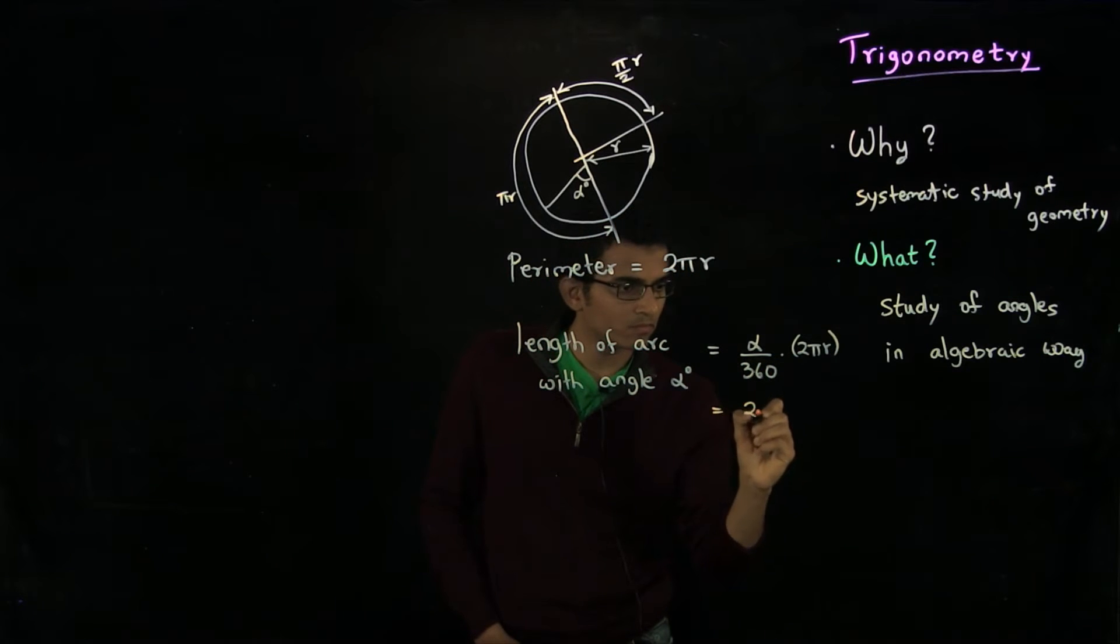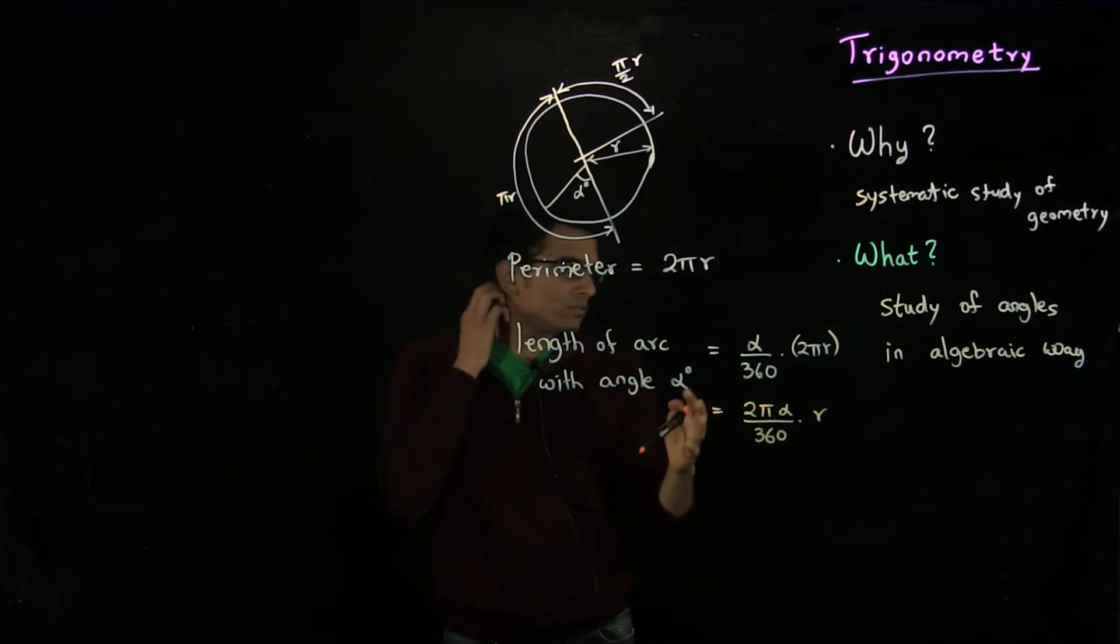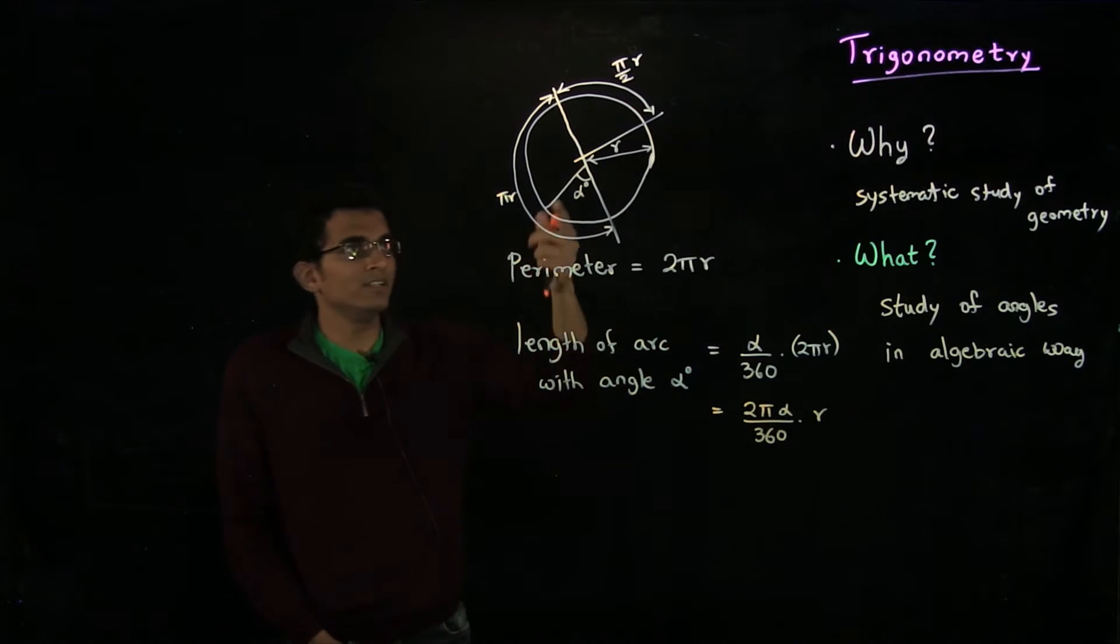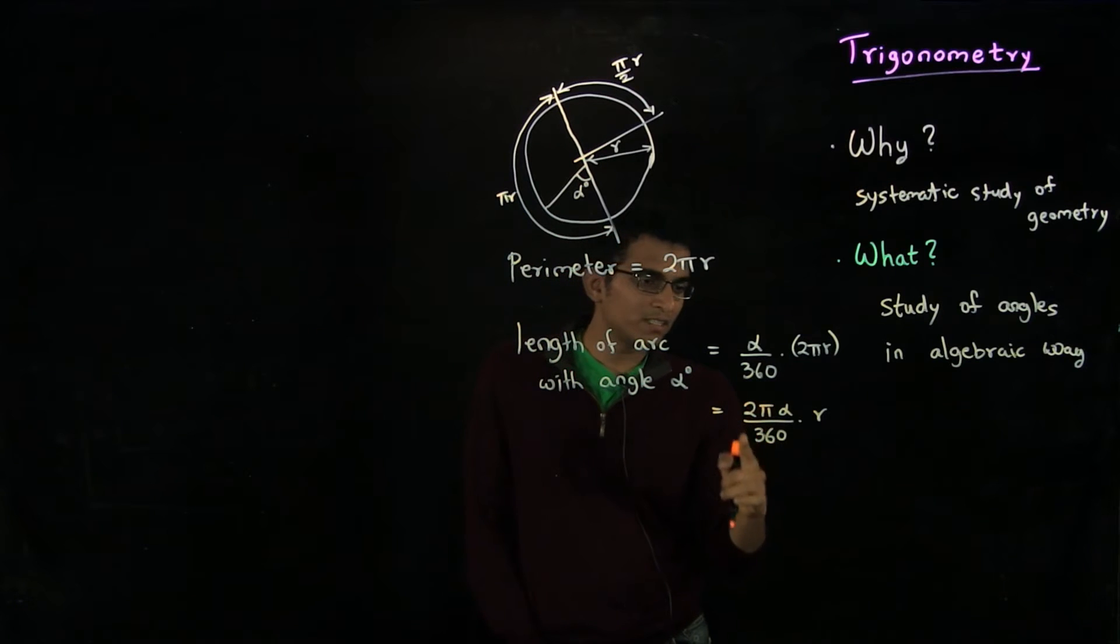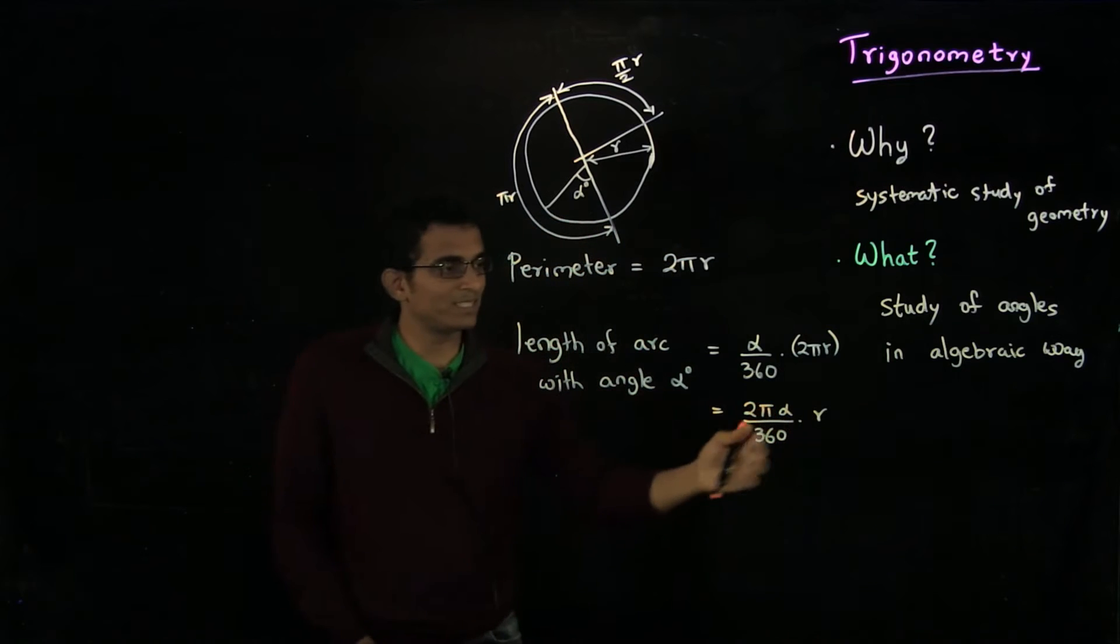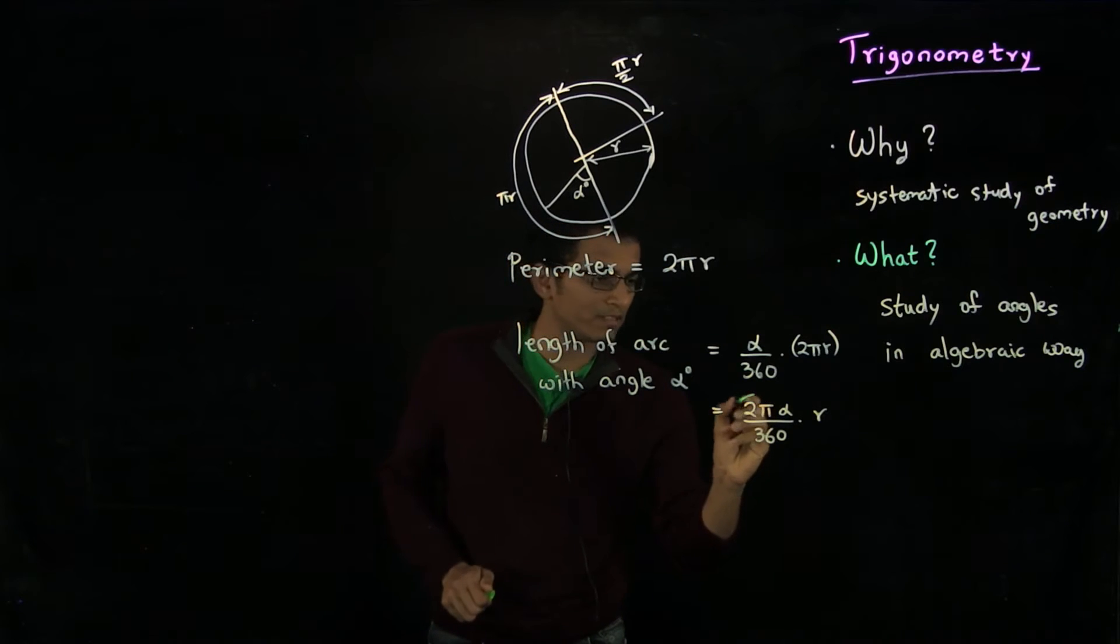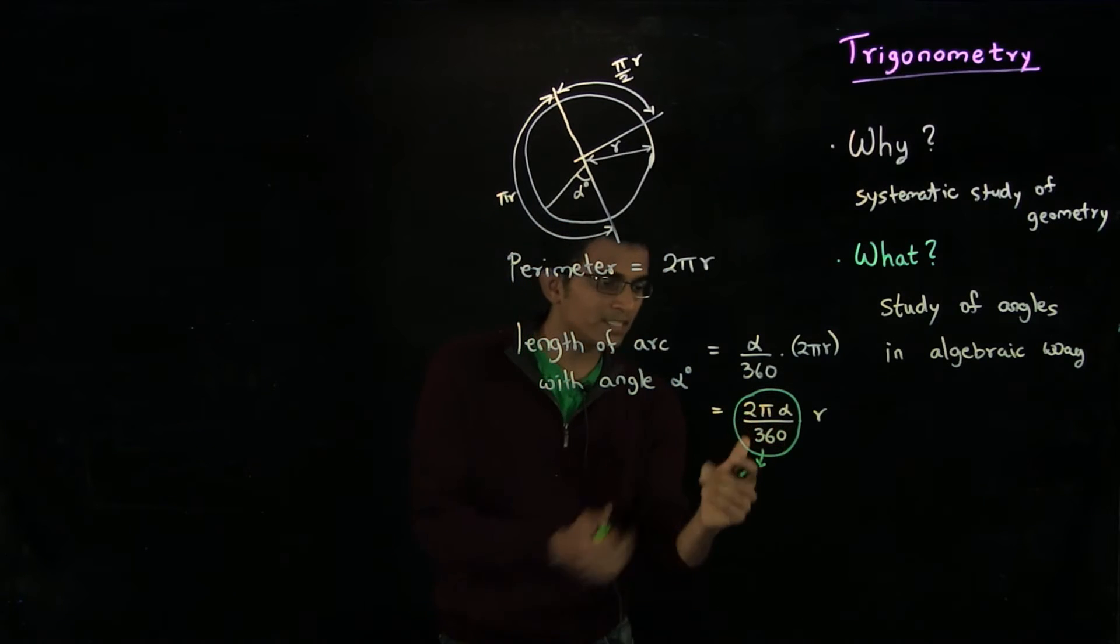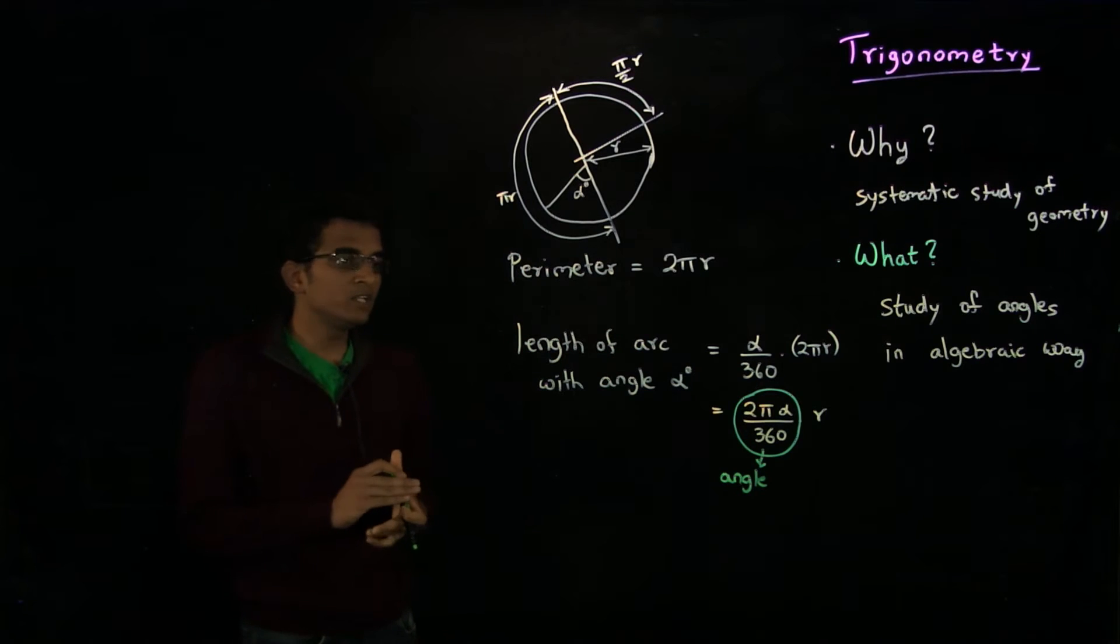In school, we have been taught to think in terms of degrees and the full circle has 360 degrees. But when we want to write the length of an arc, we have to write this annoying expression, which is 2π alpha/360 times r. It would be much nicer to call this expression 2π alpha/360 as the angle itself. If we could define this quantity as the angle, then it would be much nicer.